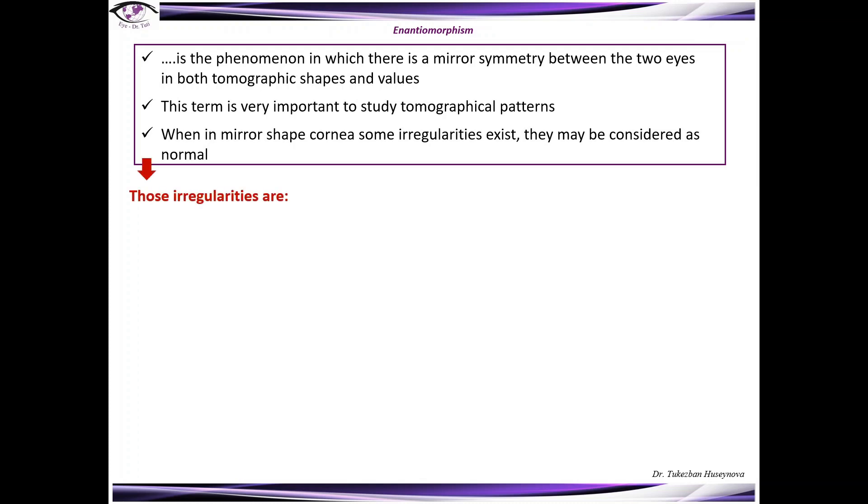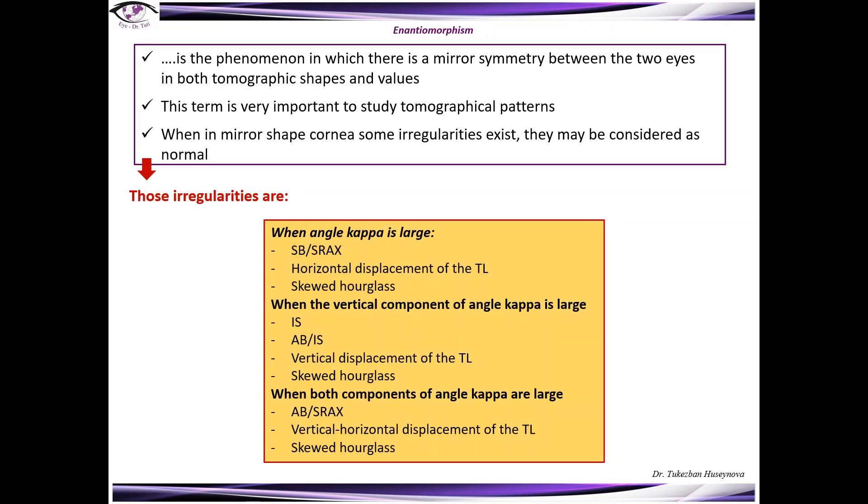And those irregularities are: When angle kappa is large, symmetric bow tie with skewed radial axis, horizontal displacement of the thinness location, skewed hourglass pattern on elevation maps are considered normal. When the vertical component of angle kappa is large, inferior steep, asymmetric bow tie, vertical displacement of the thinness location and skewed hourglass pattern on elevation maps are normal.